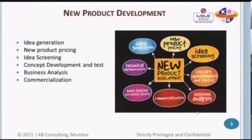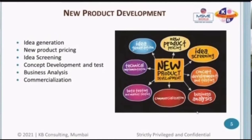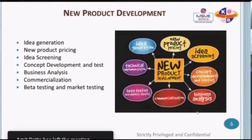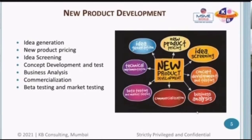Then you do commercialization — you think about what investment is required, what kind of machines you'll need, what process you'll need to work with the plastic material. After that, you do beta testing and market testing. You create prototypes — in this day and age you can just 3D print anything, so you just do 3D printing and beta testing. You share the product with your customers, wholesalers, and everybody, and get their input on your product.